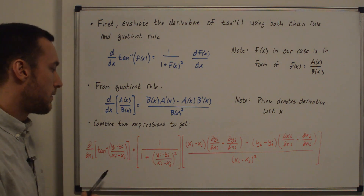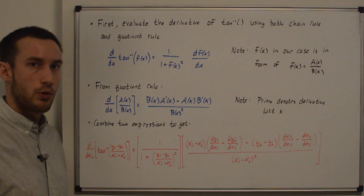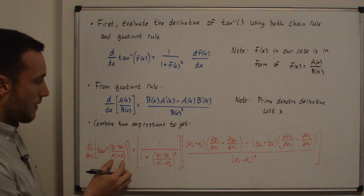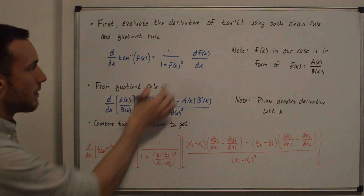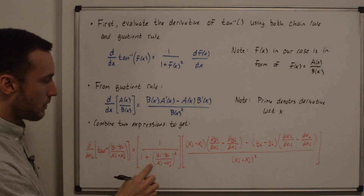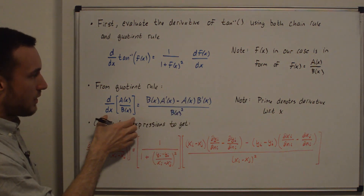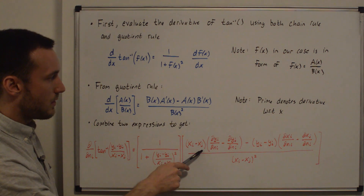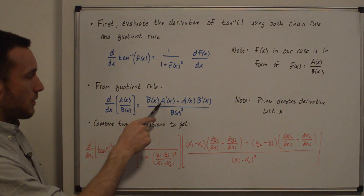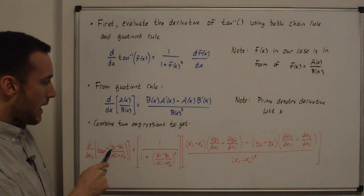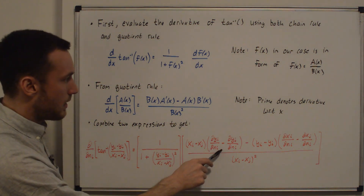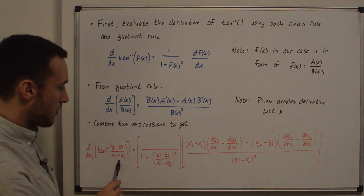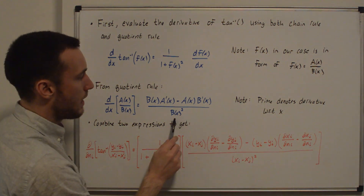Combining these, the partial d/d n_i of the inverse tangent term gives: 1 over (1 + argument²) times the quotient rule result. The denominator of the arctan argument is xi minus xj, so that's b(x). The derivative of the numerator with respect to n_i is d y_i / d n_i minus d y_j / d n_i. Then minus the numerator (yi minus yj) times the derivative of the denominator: d x_i / d n_i minus d x_j / d n_i, all over (xi minus xj)².